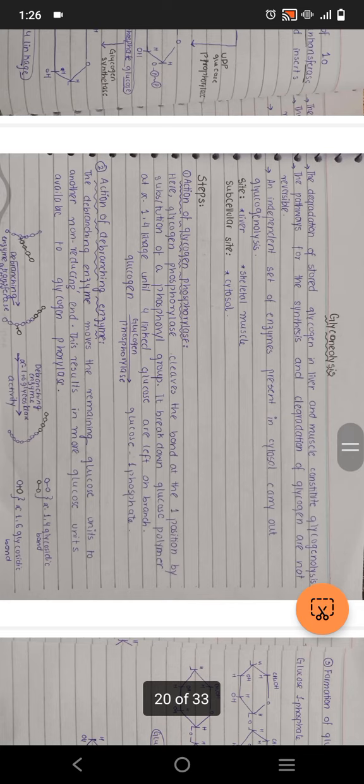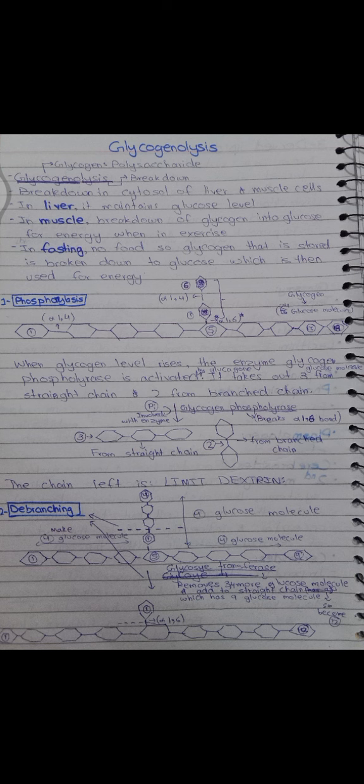When glycogen levels rise, glycogen phosphorylase gets activated. In step one, glycogen phosphorylase acts by removing glucose molecules from the straight chain — it removes about three from the straight chain and two from the branching chain, leaving 15 in the main chain. It acts on glycogen using phosphorylase. The remaining shortened molecule is called limit dextrin, because the degradation has reached a limit; dextrin is a polymer of glucose.